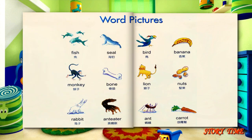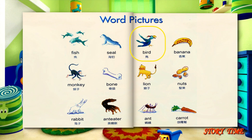Let's learn these new words together. Picture one: fish. Picture two: seal. Picture three: bird. Picture four: banana.